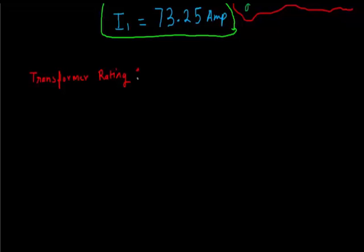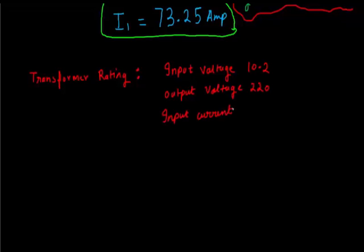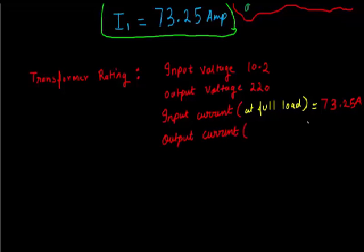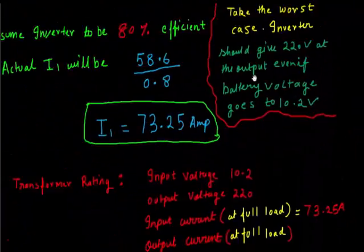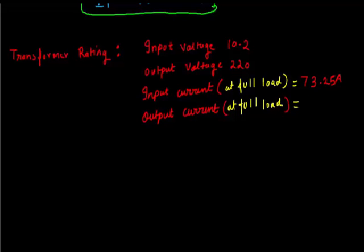Now I will briefly describe the transformer rating here. Input voltage should be 10.2 volts. Output voltage is 220 volts. Input current at full load should be 73.25 amps. Output current should be 2.72 amps. So this is all about the transformer design.